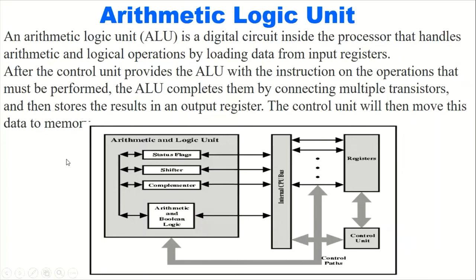Another part of the CPU is the arithmetic logic unit, or ALU. The ALU is a digital circuit inside the processor that handles arithmetic and logic operations. Arithmetic operations perform different mathematical calculations like addition, subtraction, multiplication, and division by loading data from input registers. After the control unit provides the ALU with instructions, the ALU completes them by connecting millions of transistors, then stores the result in output registers — temporary storage areas called registers.